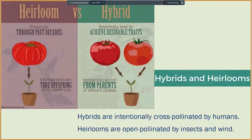Heirloom varieties are the varieties of the past, usually pre-World War varieties, that have been handed down through the generations via seeds. These seeds have been selected by gardeners for a specific trait. Heirlooms are open-pollinated by the insects or the wind. There is no intentional human intervention. These varieties have been noticed, picked, and then the seeds have been saved for future generations to regrow more of that variety.